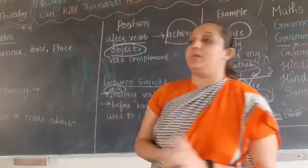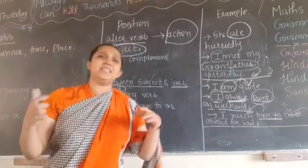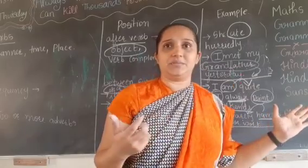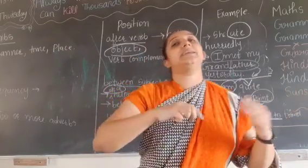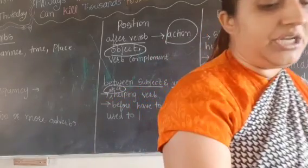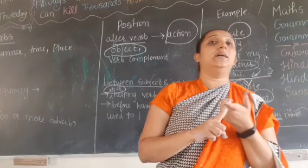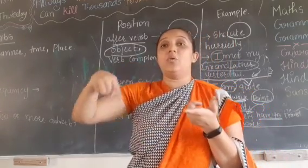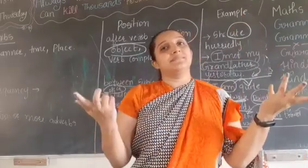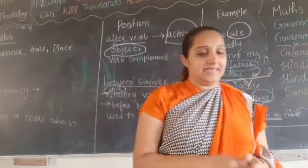In some sentences there can be two or more adverbs. For example: 'She performed well here yesterday.' 'Well' is an adverb of manner, 'here' suggests place, and 'yesterday' suggests time — so there are two or more adverbs in one sentence.